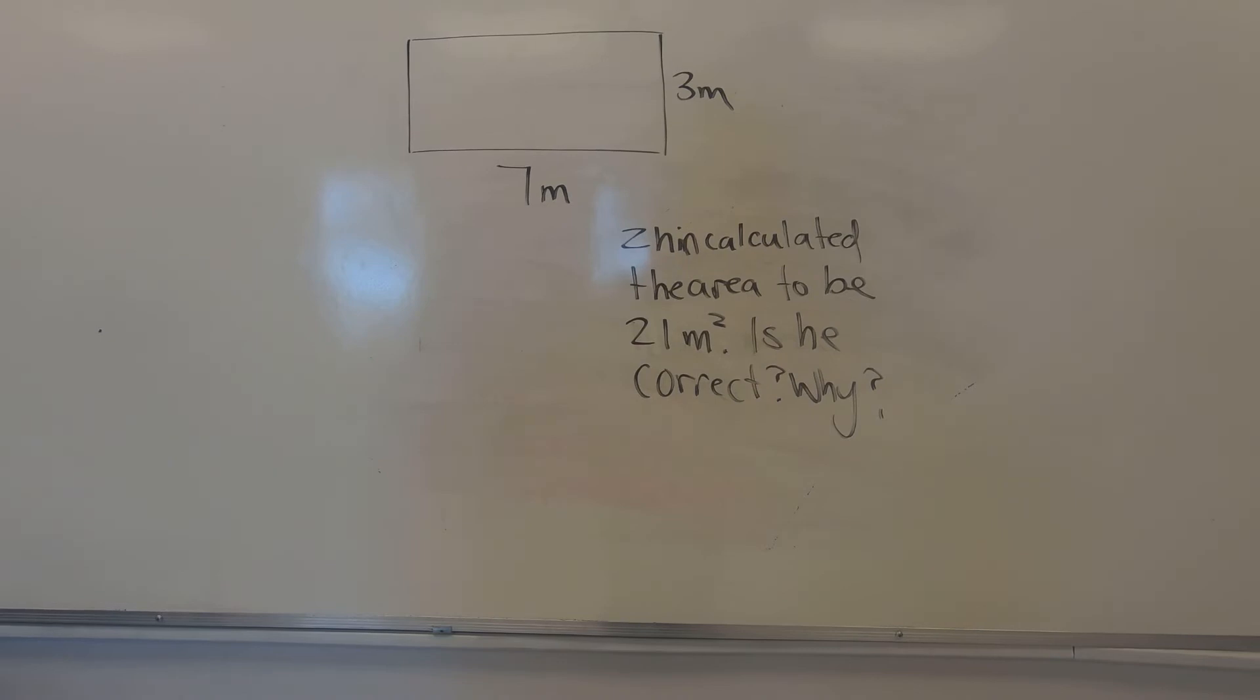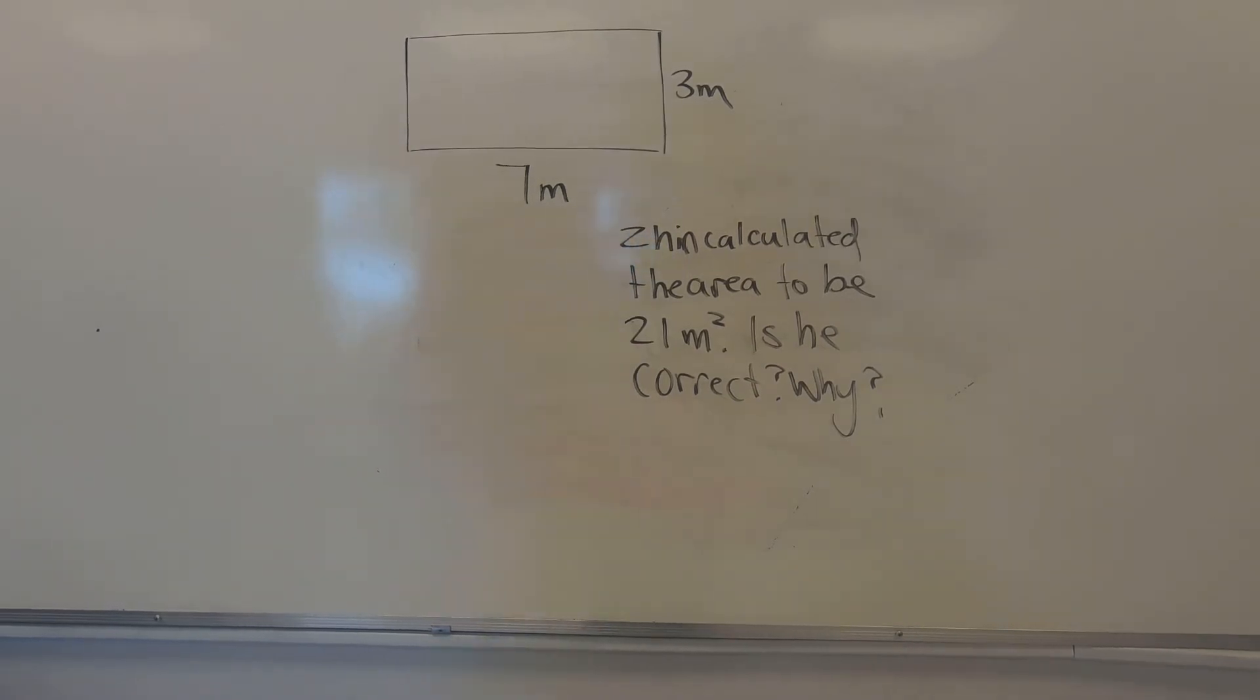This one is a rectangle, so similar to a parallelogram, but there is one big difference, and it's definitely different here. And it says, Shin calculated the area to be 21 centimeters squared, or meters squared, I should say. Sorry, is he correct and why?